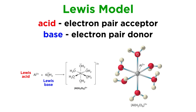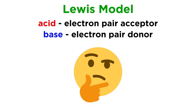Another example of Lewis acid-base chemistry involves the hydration of metal ions. Something like an aluminum 3+ cation can interact with water molecules, where it accepts a pair of electrons from each of six water molecules to form this aluminum hexahydrate. There are many other examples of Lewis acid-base chemistry that go beyond the scope of what we are learning here, so for now we can just understand the definition and be able to identify examples of Lewis acids and bases.